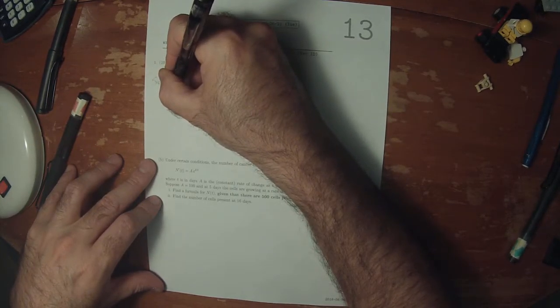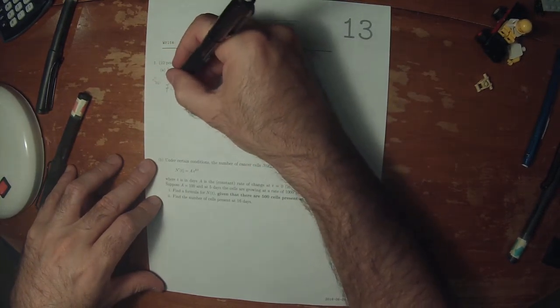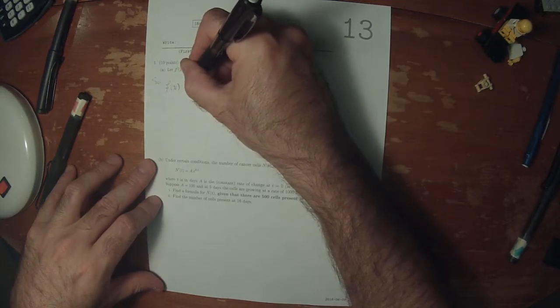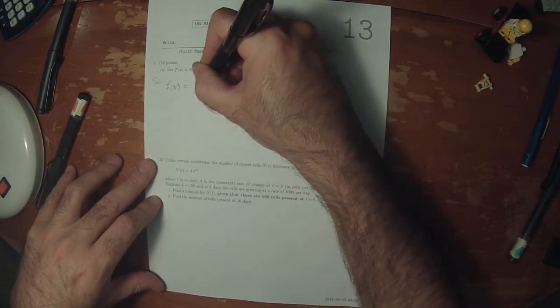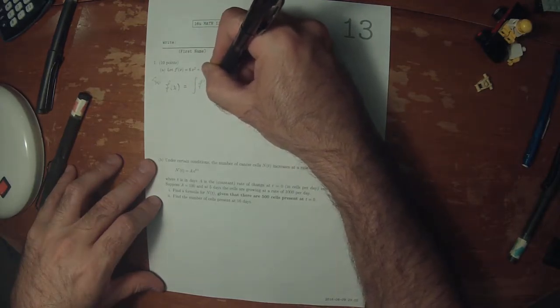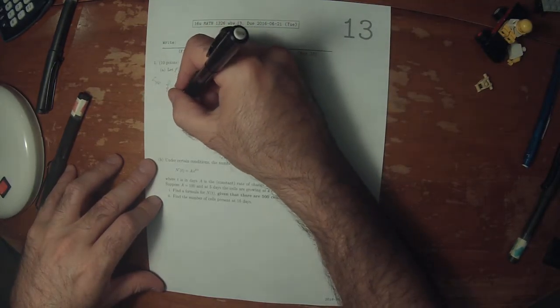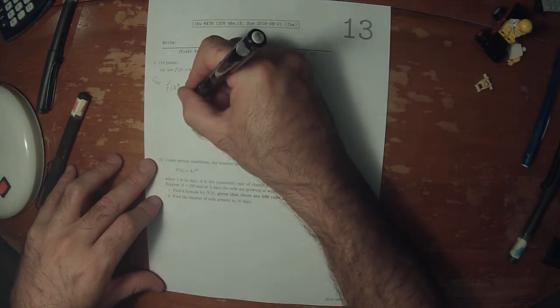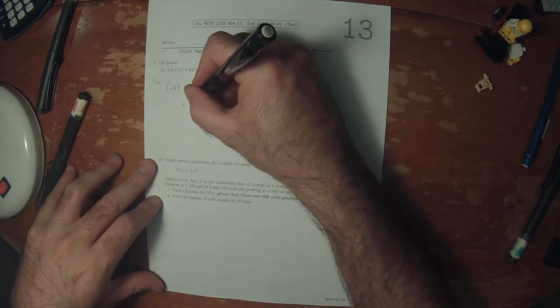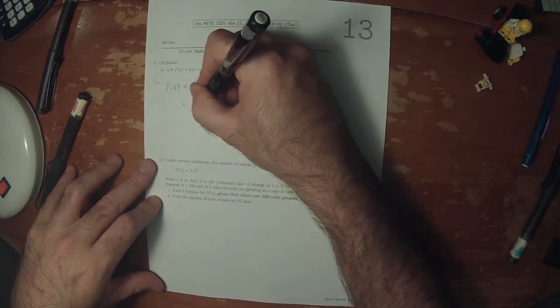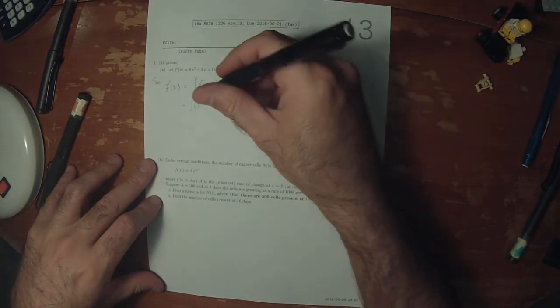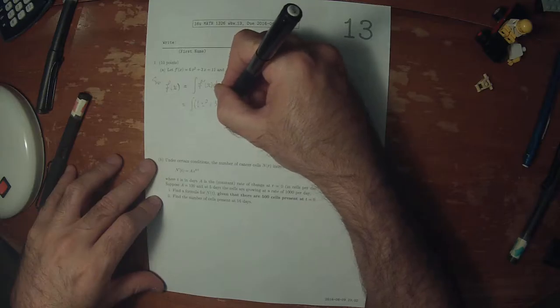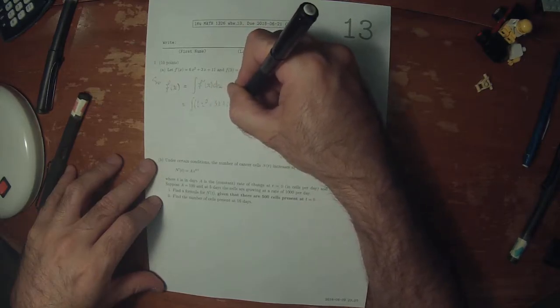The fundamental idea is that function f is the anti-derivative of its derivative. So the anti-derivative of 6x squared plus 3x plus 11 dx